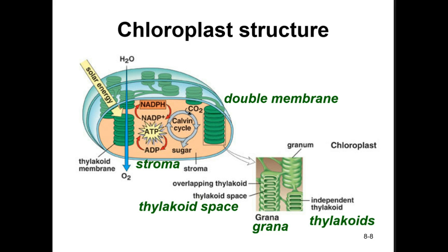Here is a close-up of how the chloroplast is arranged. Each chloroplast is bounded by a double membrane and contains a fluid called the stroma. The membranous thylakoids, stacked in grana, are interconnected so that there is a single thylakoid space. The light-dependent reactions of photosynthesis occur in and adjacent to the membranes of the thylakoids. Reactions of the Calvin Cycle that capture carbon dioxide and produce sugar occur in the stroma.